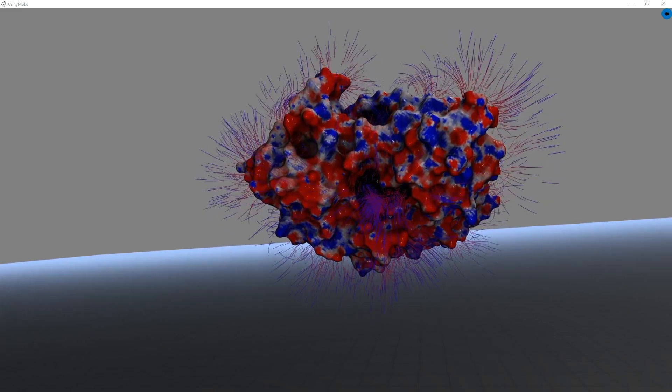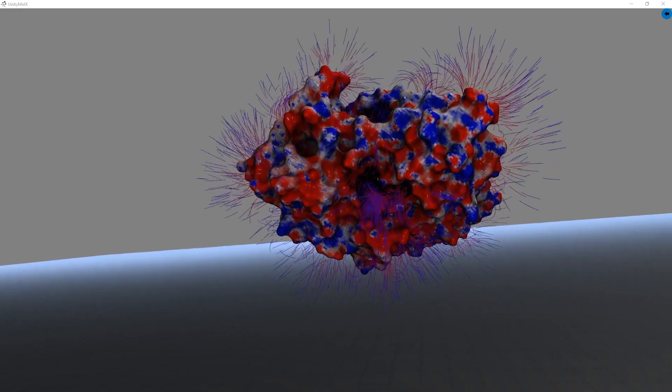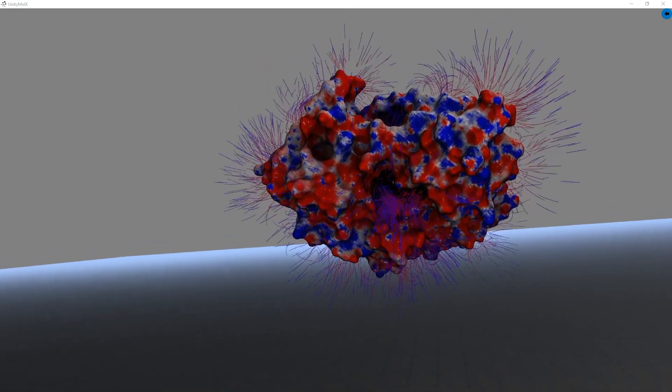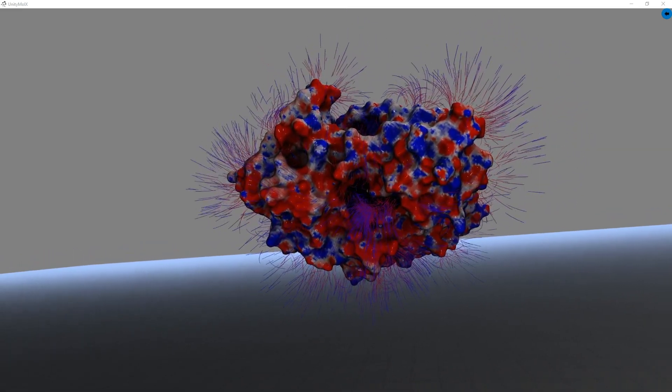At the moment we are showing the surface of the enzyme, and it is colored by the electrostatic surface potentials, where blue is positive, red is negative, and white is neutral.